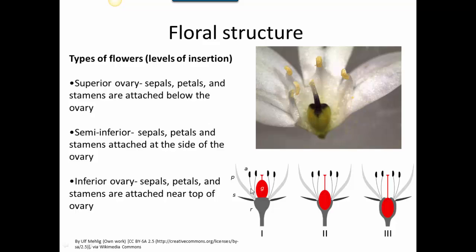A semi-inferior ovary is one in which the sepals, petals, and stamens are attached at the side of the ovary. An inferior ovary is one in which they are attached near the top of the ovary. This is often an important break in the key when trying to identify wildflowers — what is the level of insertion of the ovary? This can be difficult to see, which is why it's often nice to bring a hand lens into the field.